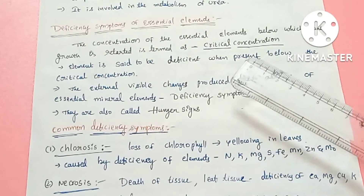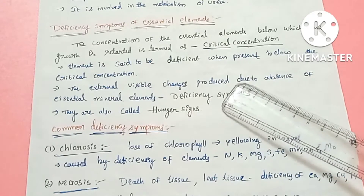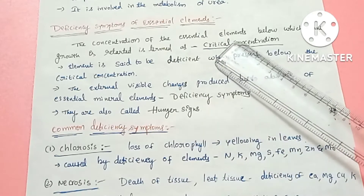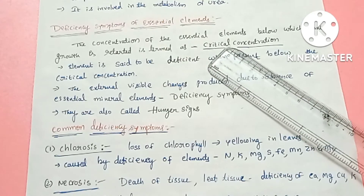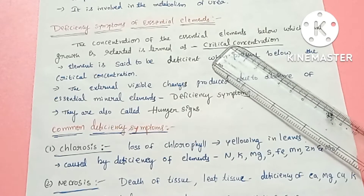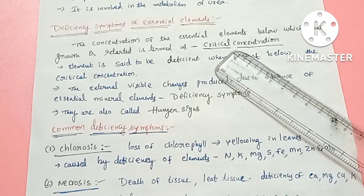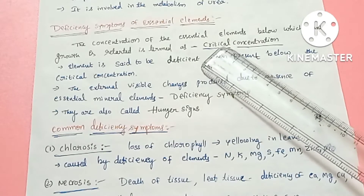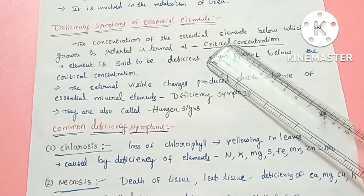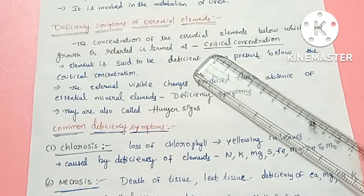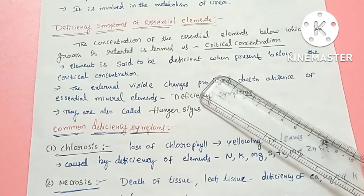Deficiency symptoms. These elements are the requirements of the plant. The concentration of the essential element below which the growth of the plant gets retarded is called the critical concentration. If the element is below this level, it is considered a deficient element.